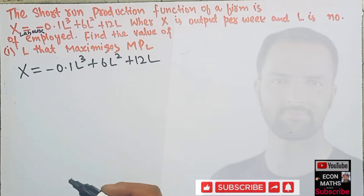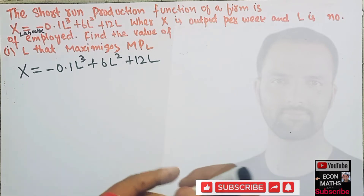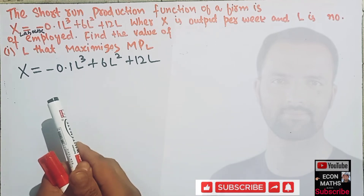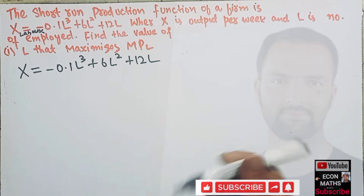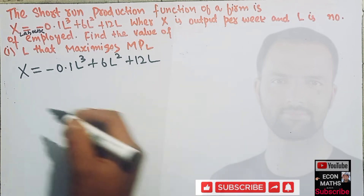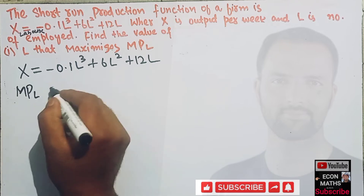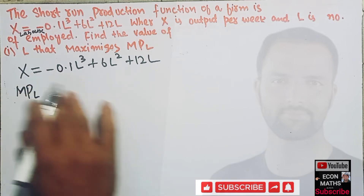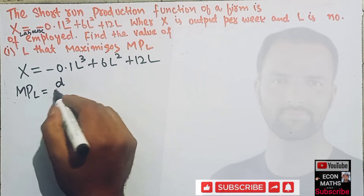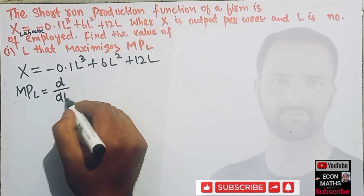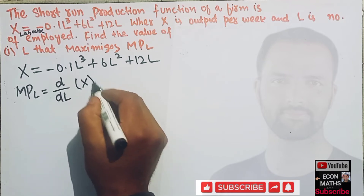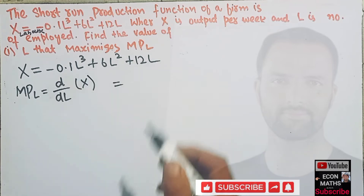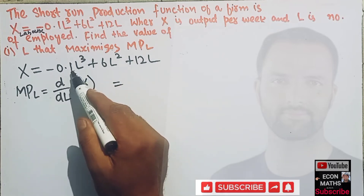Now first we need to find the marginal product of labor. The marginal product of labor is simply the derivative of the production function with respect to labor — that means the derivative of output with respect to labor. Since we have only one variable here, we do not use the partial derivative.